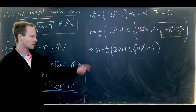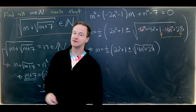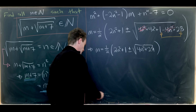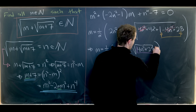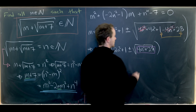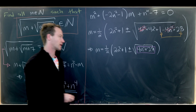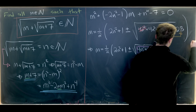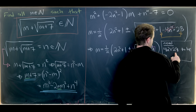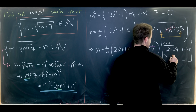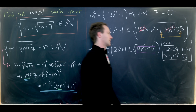In order for m to be a natural number, we must have the expression within our radical be equal to a perfect square. So we need 4n squared plus 29 to be a perfect square.